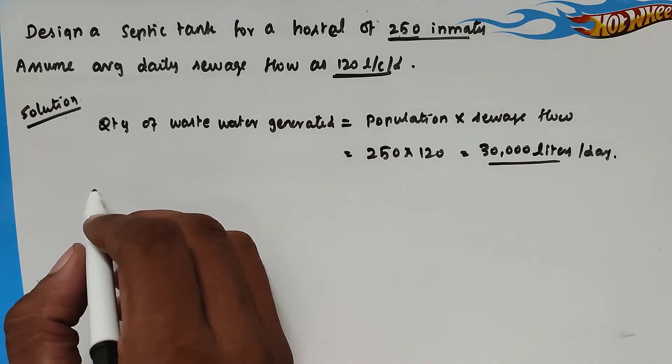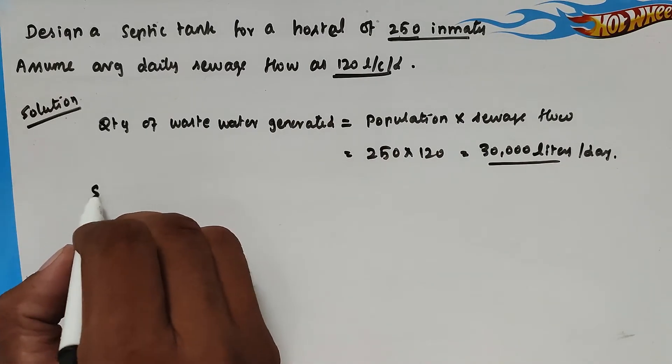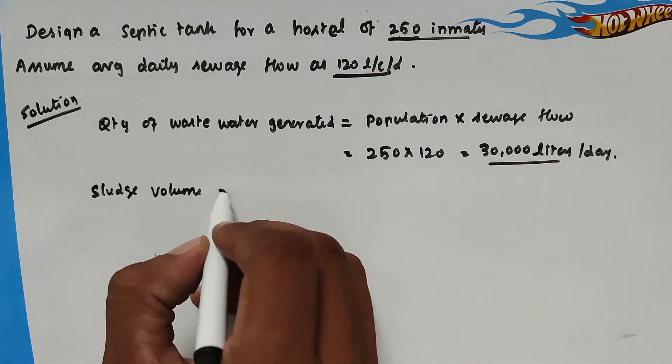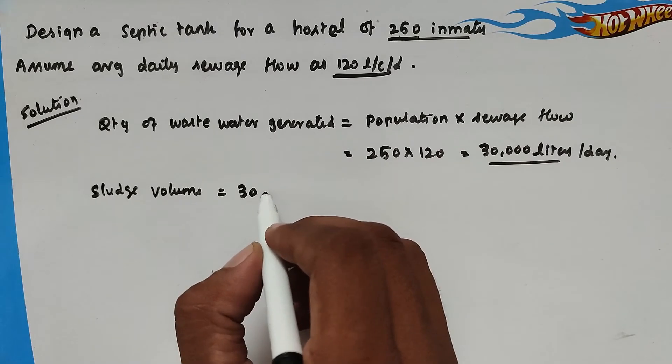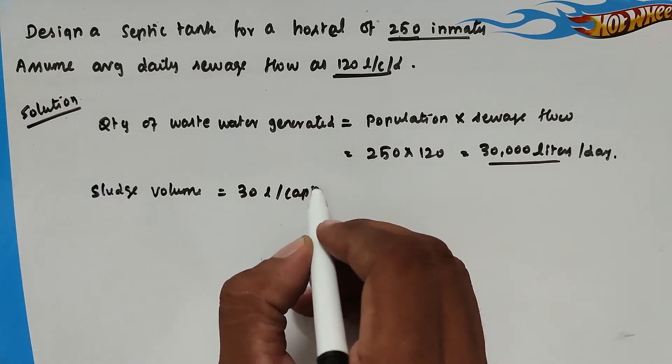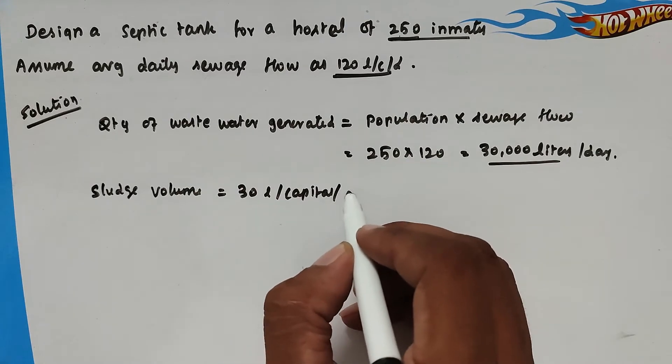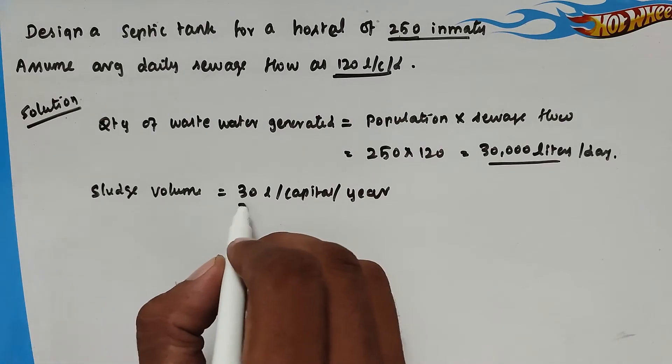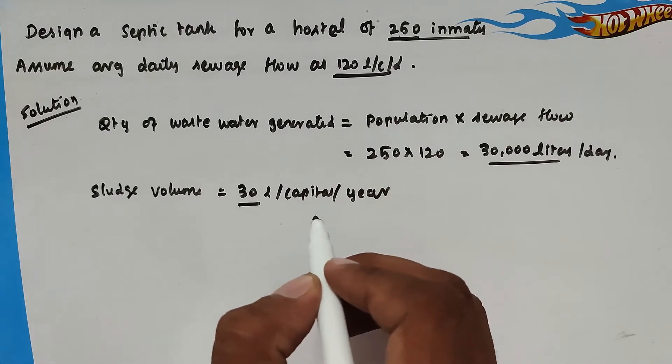Now sludge volume. We can assume 30 liters per capita per year. So one person will generate the sludge of 30 liters per year.